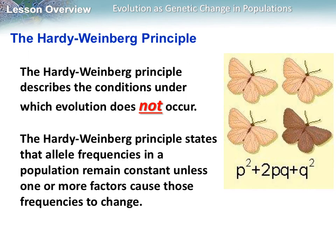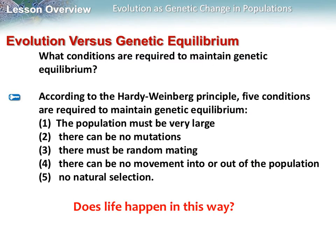The Hardy-Weinberg principle describes conditions where evolution does not occur. It states that allele frequencies in a population remain constant unless one or more factors cause those frequencies to change. Five conditions must be met: the population must be very large, there can be no mutations, there must be random mating, there can be no movement into or out of the population, and there can be no natural selection.